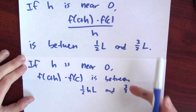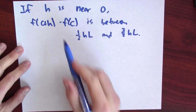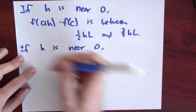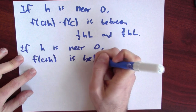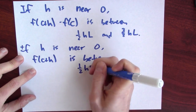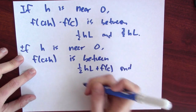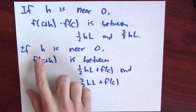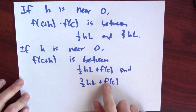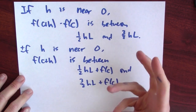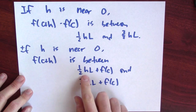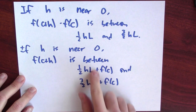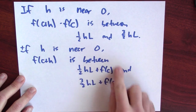I get from here to here just by multiplying by h. Then I can add f of c to all of this and find that if h is near enough 0, then f of c plus h is between one-half hl plus f of c and three-halves hl plus f of c. So we've shown that if h is small enough, f of c plus h is between these two numbers. What if l is positive? If l is positive and h is some small but positive number, this is telling me that f of c plus h, being between these two numbers, is in particular bigger than f of c.